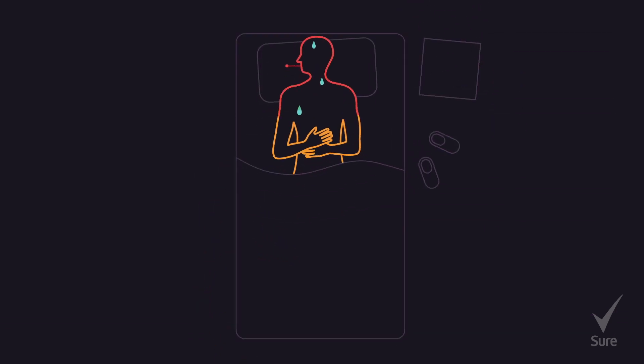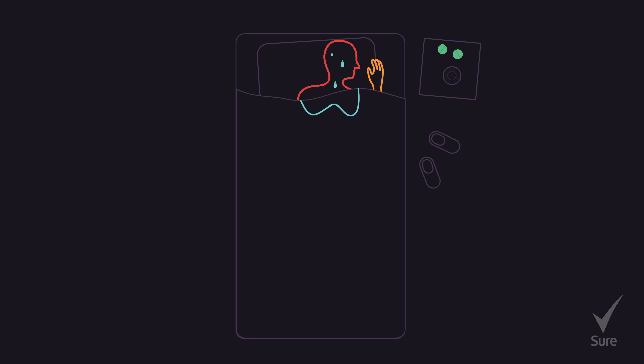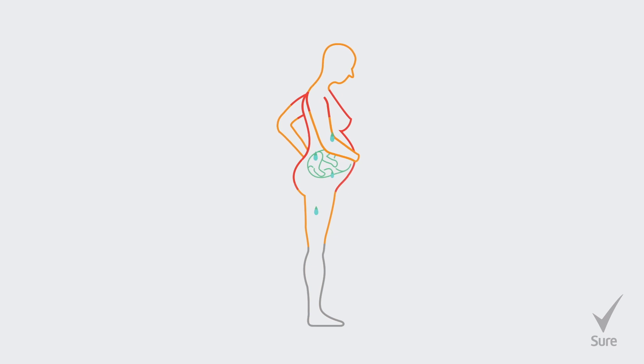We sweat when we're ill or taking medication, and some people sweat while they sleep. Women sweat more when they're pregnant and during the menopause.